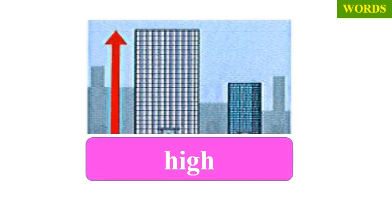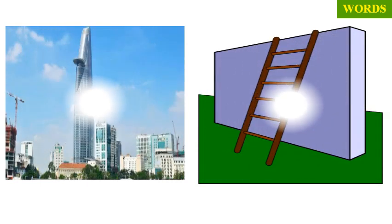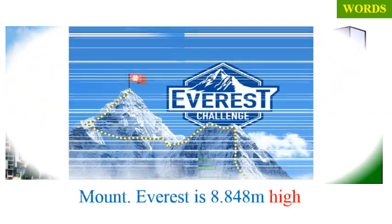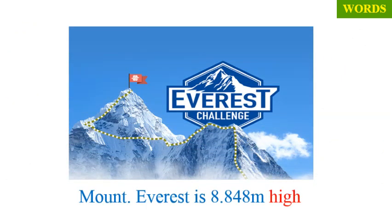Now have a look at the last picture. Listen and repeat. High. You can say a high building, high mountain or a high wall. And do you know Mount Everest is 8,848 meters high.